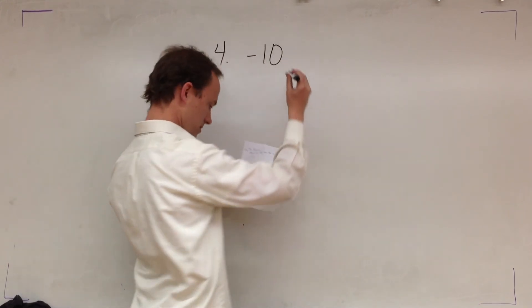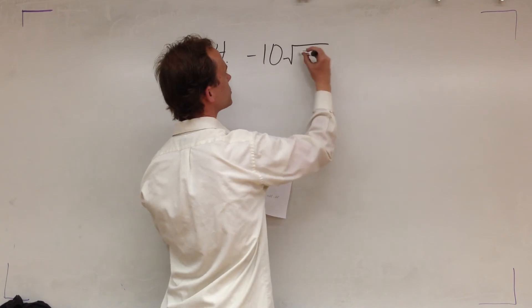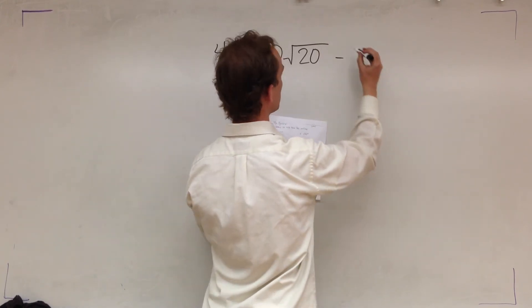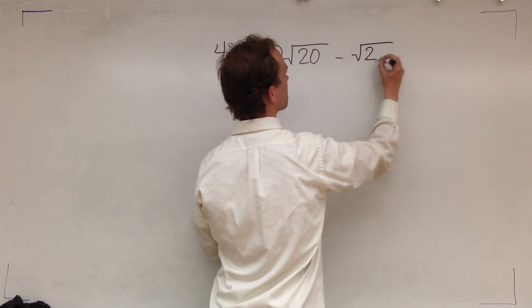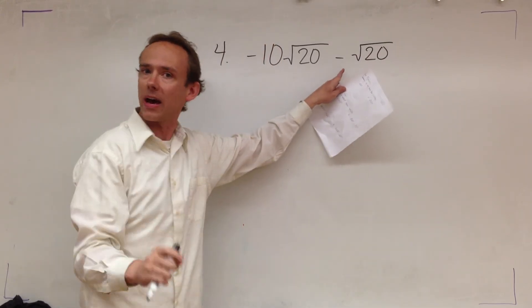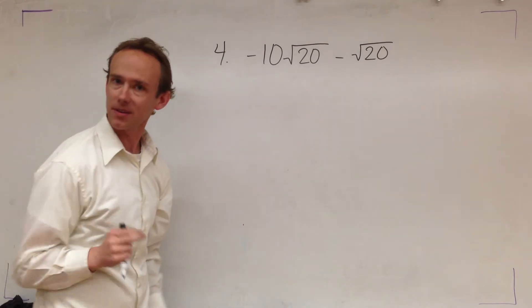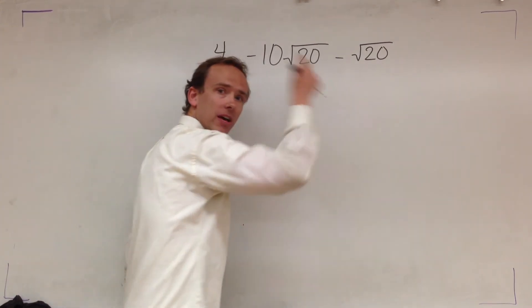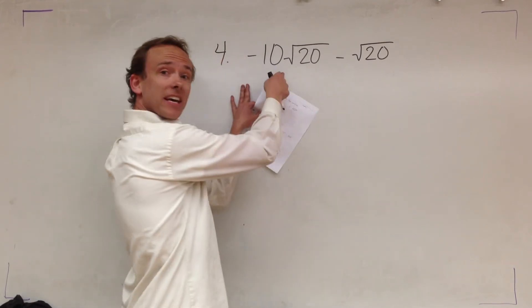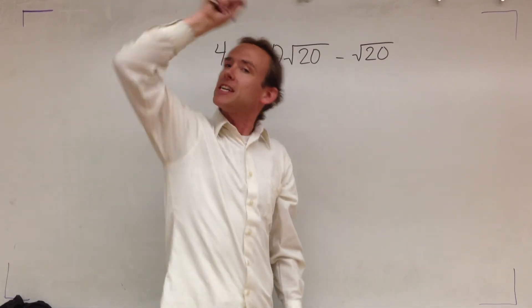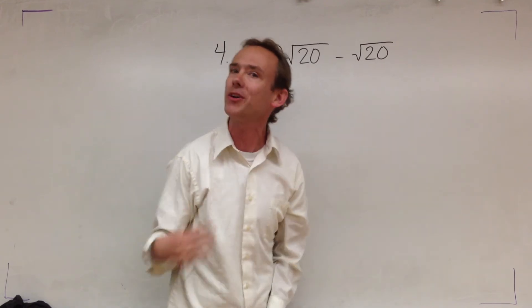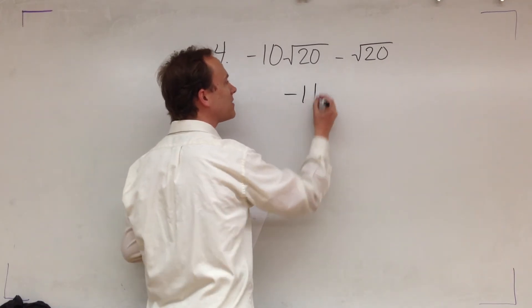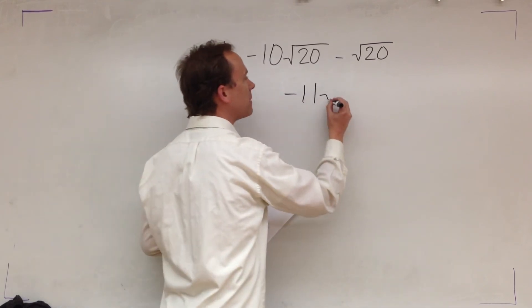Look, number 4. We got negative 10 route 20 minus route 20. Now we know there's a 1 there. We know that. We don't write it, but we know it. So negative 10 minus 1. Negative 10 minus 1. That's negative 10. Subtract 1. It needs to get smaller. You're taking 1 away from negative 10. So negative 10 minus 1 is negative 11. I still got my Route 20.